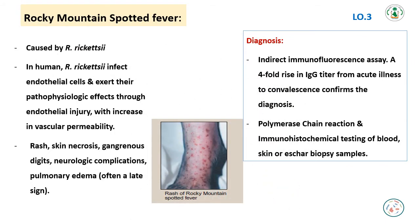Rocky Mountain Spotted Fever is caused by Rickettsia rickettsii. Rickettsia rickettsii infects endothelial cells and exerts its pathophysiologic effects through endothelial injury with increased vascular permeability. Clinical features include rash, skin necrosis, gangrene of digits, neurological complications, and pulmonary edema, which is often a late sign of the disease.